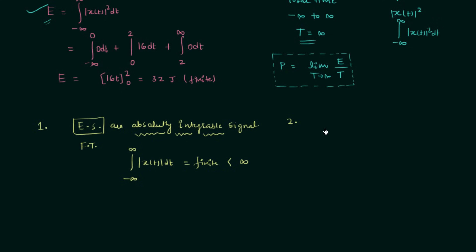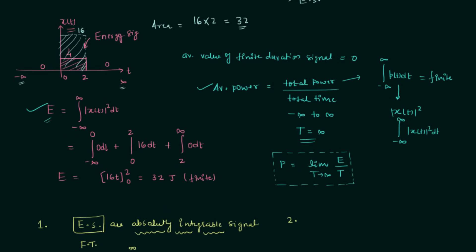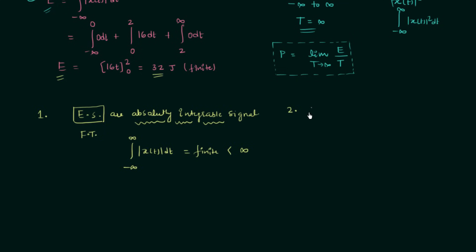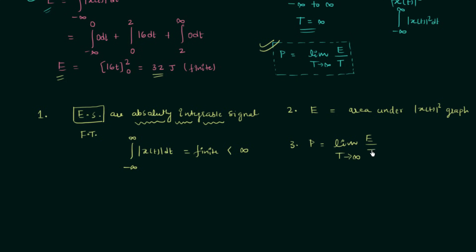Now the second property: the total energy of a signal equals the area under the |x(t)|² graph. We can see this from the example where the area under |x(t)|² was 32 and the total energy was also 32. The third property, already derived, is that the average power equals the limit as T tends to infinity of total energy over total time. There are further properties related to shifting, scaling, and reversal which will be discussed after solving questions on energy signals.